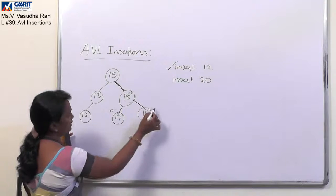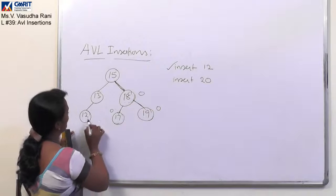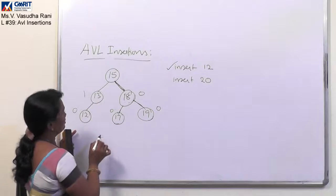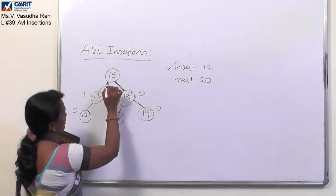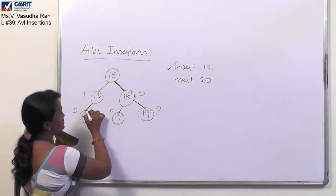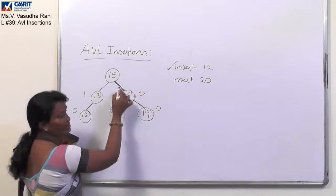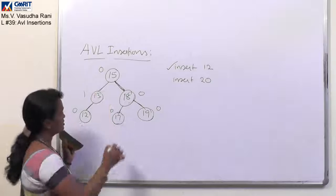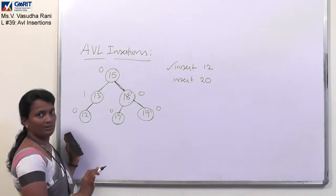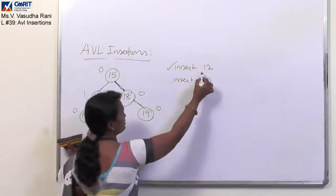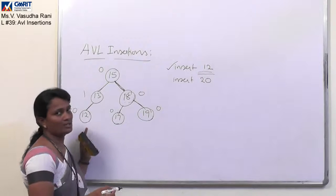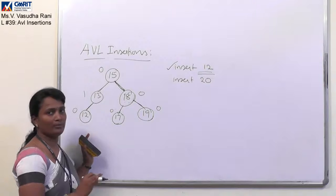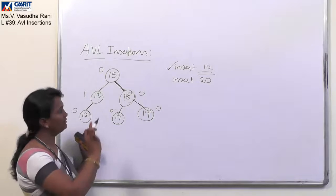Here 17 it is 0 and 19 is 0, 18 is 0 and 12 it is 0, 13 it is 1, and 15 - the left subtree's height is 2 and the right subtree's height is 2 considering either the paths. So it is 2 minus 2 and it is 0 only. So this is an AVL tree only. So by inserting this new node 12 into this tree, it is not violating the property of AVL. So no need of performing any rotations on it after inserting 12.